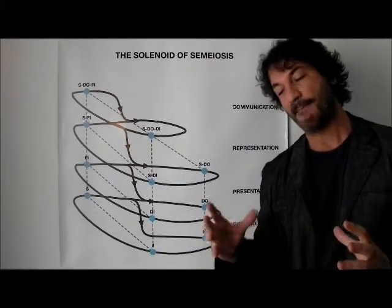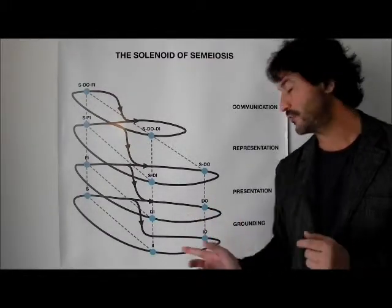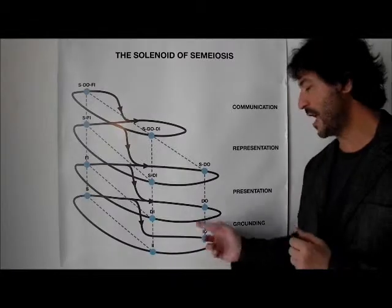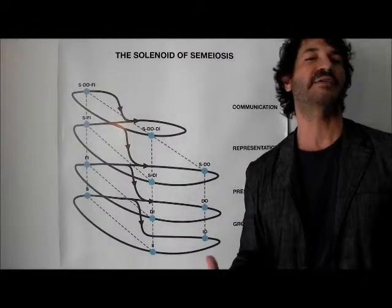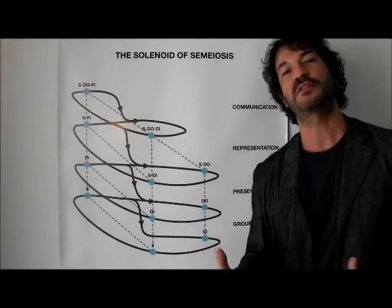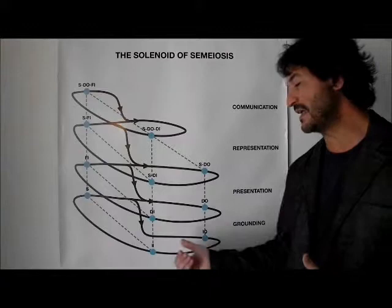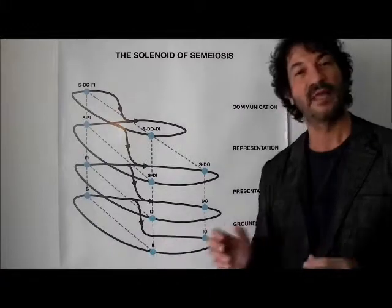Roy Frieden could, by this transformation of the diagram, derive the Einstein equations of space and time.